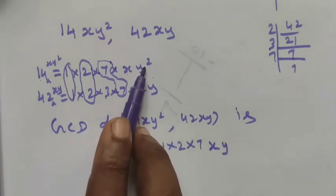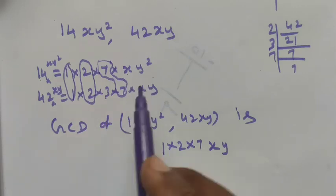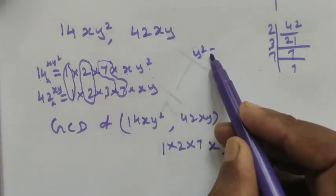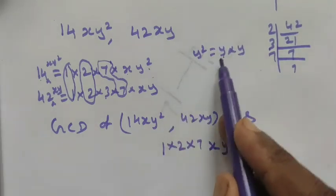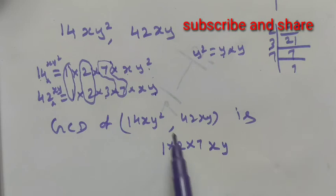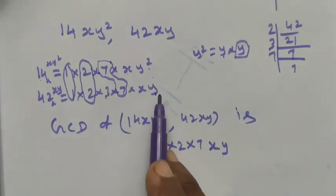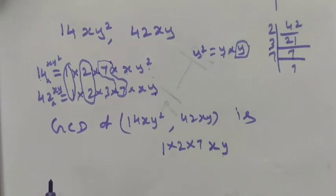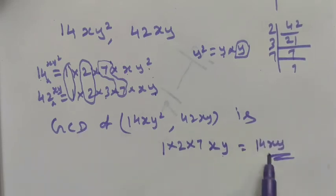Here we have y² but in the second expression we have only y. y² can be written as y × y, so one y is common to both. The additional y in y² is not present in the other term, so we don't choose it. Therefore the GCD of the variable part is just y.